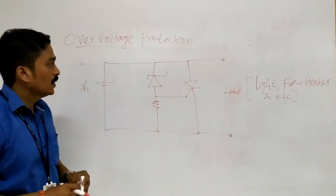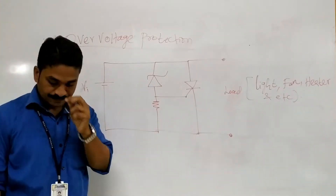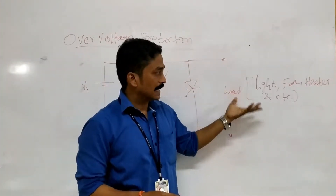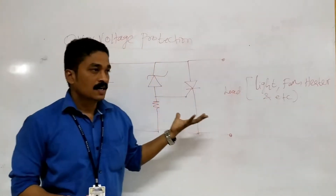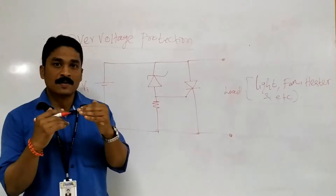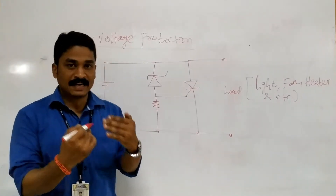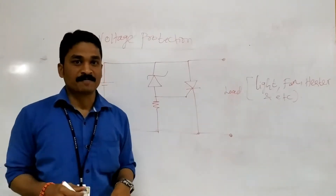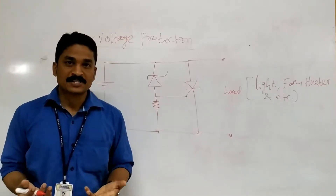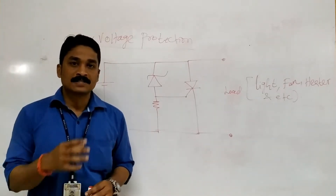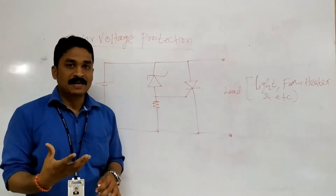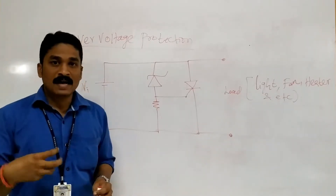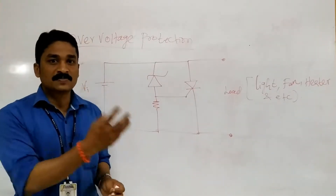The next application is over-voltage protection. Electronic and electrical devices like fans, lights, and heaters are designed to work at a particular voltage value — they have a maximum voltage rating. If the supply voltage exceeds that rating, this is called over-voltage. Over-voltage causes overheat due to over-power, which may damage the devices or cause them to stop working.